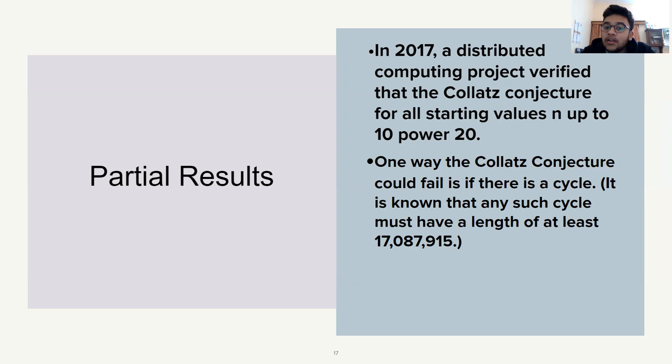One way the Collatz conjecture could fail is if there is a cycle other than the known 1-4-2 loop. In any Collatz sequence, once you attain the value 1, you revolve around the same three numbers: 1, 4, 2. If any other cycle were found, that would prove the conjecture wrong or allow us to discard it.